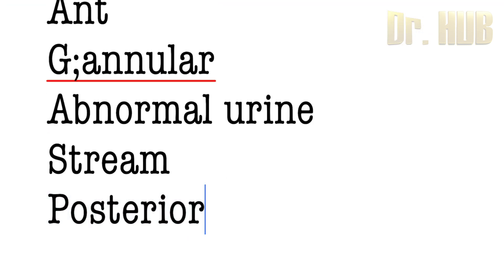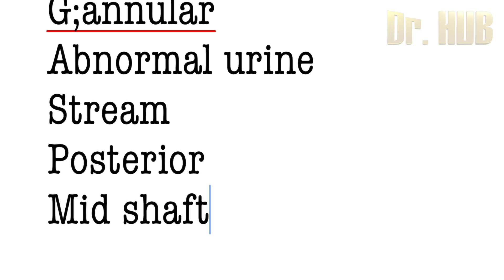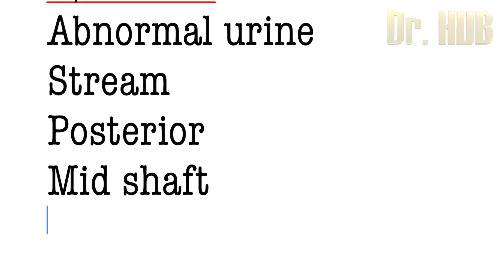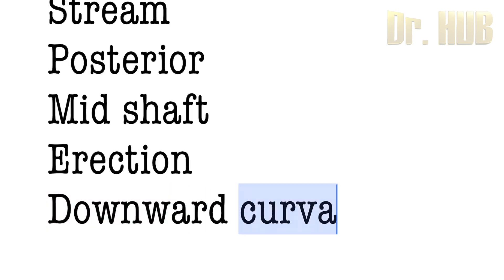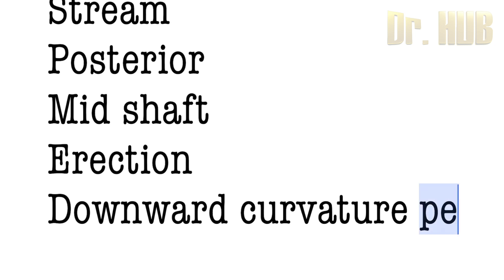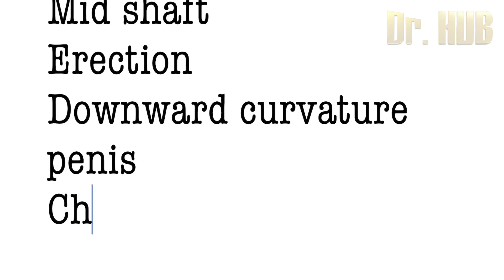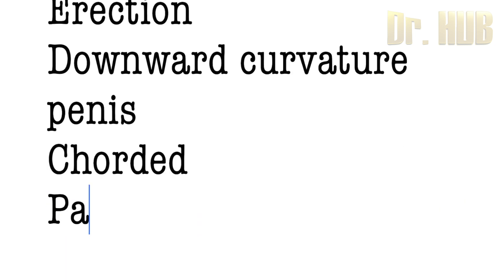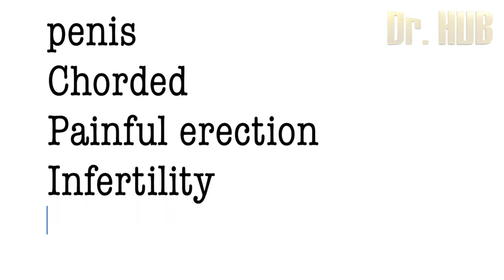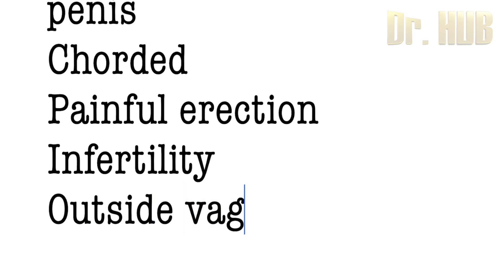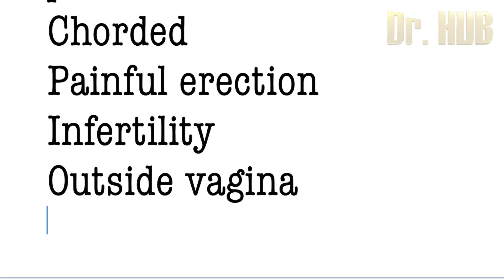For the posterior type — the midshaft as well as proximal penile — at the time of erection there is a downward curvature of the penis, caused by the chordae. There is also a painful erection. In terms of infertility, in proximal penile hypospadias at the time of intercourse, the semen is deposited outside the vagina.